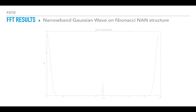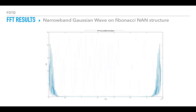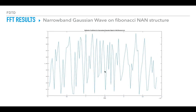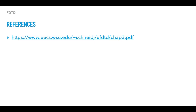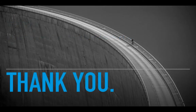For the narrowband on the Fibonacci structure, the same idea applies — we have the reflection coefficient for the narrowband case. These are basically the findings we require: the narrowband and broadband reflection coefficients on the NAN structures. This is the main reference I have used; I will put the link in the description below. Thank you for your patience.